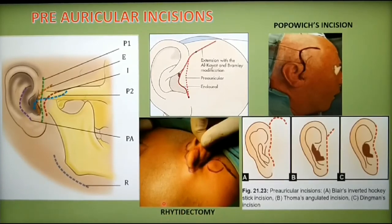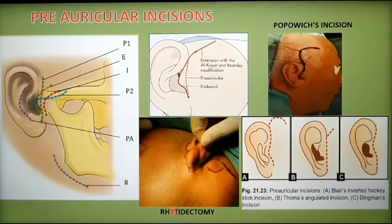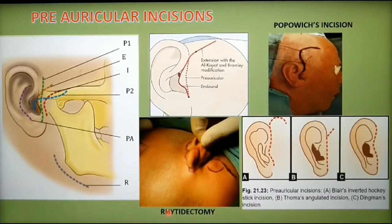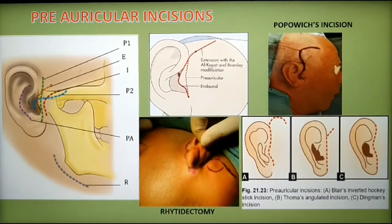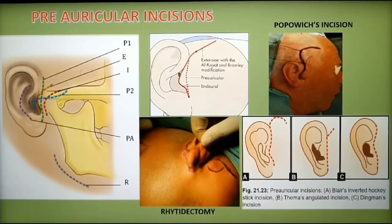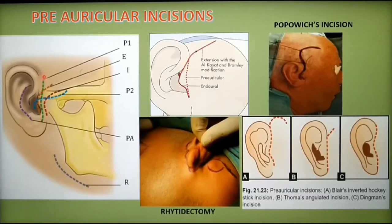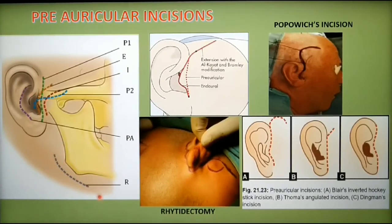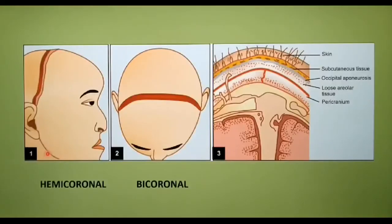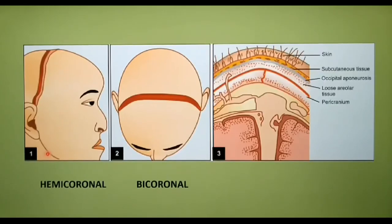The ritidectomy or facelift approach provides the same exposure as the retromandibular and pre-auricular approach — it is essentially a combination of both — and has the advantage of being placed in a more cosmetically acceptable location. In summary, the approaches used to reach the condyle include: pre-auricular incision, endoral incision, inverted hockey stick incision, post-auricular incision, and retromandibular incision. The hemicoronal or bicoronal incision is used to gain access to the condyle when it is associated with mid-face or frontal bone fractures.